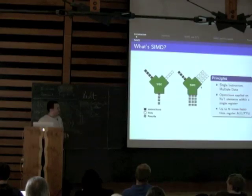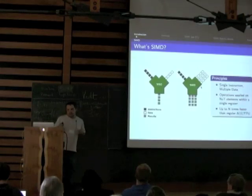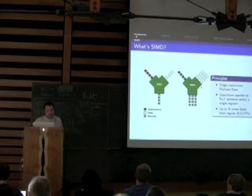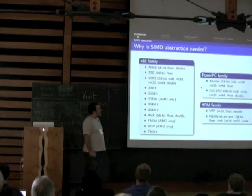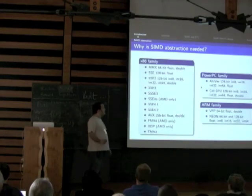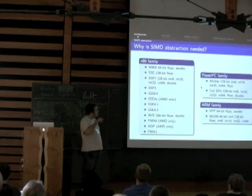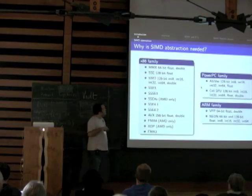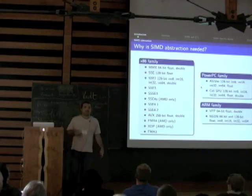SIMD has been around for a long time. The most well-known SIMD instruction sets can be split into three families. The x86 family starts with MMX in 1994 or 1995, which spawned all the SSE variants — SSE, SSE2, SSE3, SSE4, SSE4.1, SSE4.2 — and most recently AVX. These are basically available in all your x86 processors.